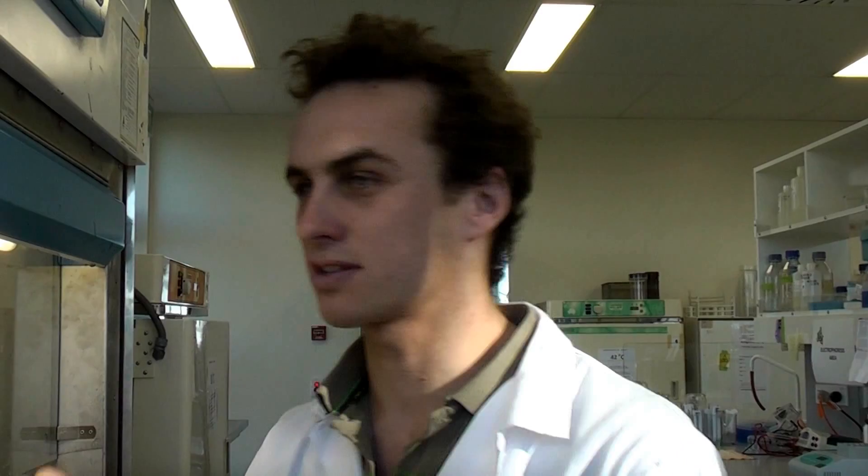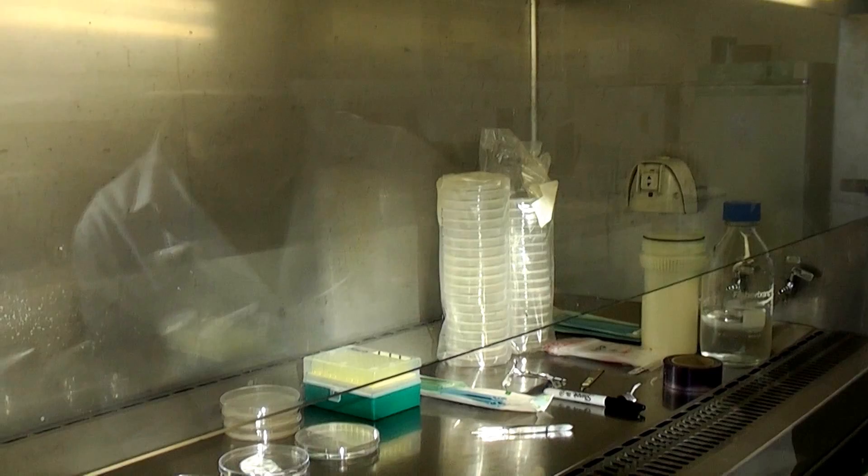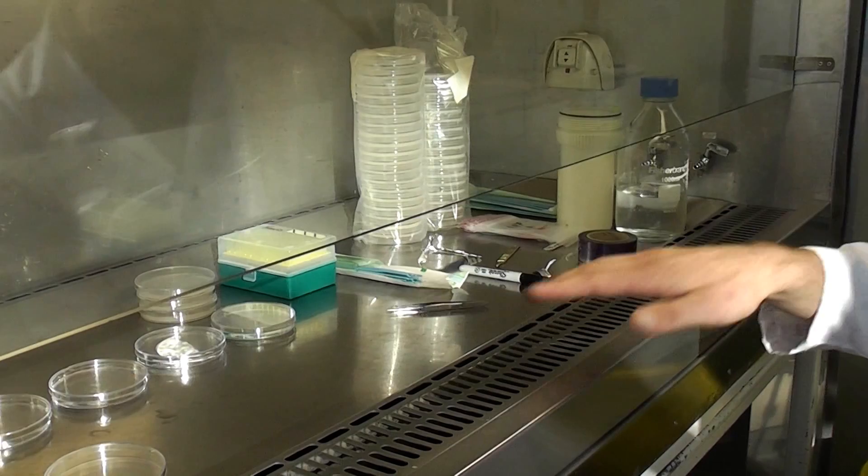This is a laminar flow cabinet. What I've done until now is I've just turned it off. It's been under ultraviolet light for 15 minutes and sterilized with ethanol, so that makes sure there's no bugs in the cabinet itself, which makes it 100% sterile in there. Any work you do with bacteria you need to be working in a cabinet like this.